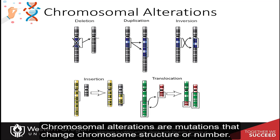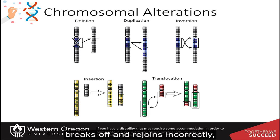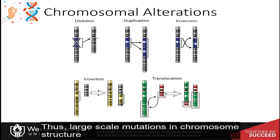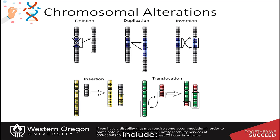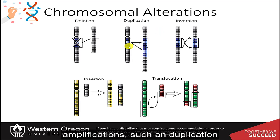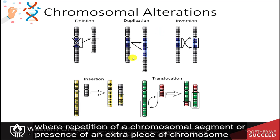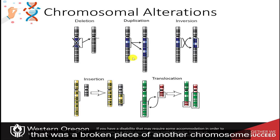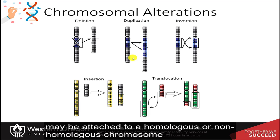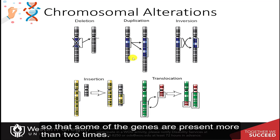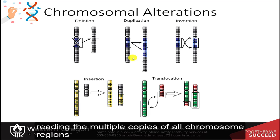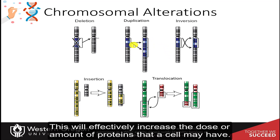Chromosomal alterations are mutations that change chromosome structure or number. They occur when a section of the chromosome breaks off and rejoins incorrectly or does not rejoin at all. Large-scale mutations in chromosome structure include amplifications, such as duplication, where repetition of a chromosomal segment or presence of an extra piece of chromosome may be attached to a homologous or non-homologous chromosome, so that some genes are present more than two times, leading to multiple copies of all chromosomal regions. This will effectively increase the dose or amount of proteins that a cell may have.